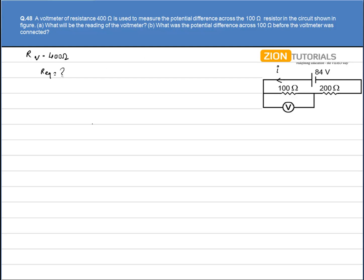Let's say R prime equivalent is 1 divided by 1 by 100 plus 1 by 400, that comes out to be 100 into 400 divided by 500. So it comes out to be 80 ohms.